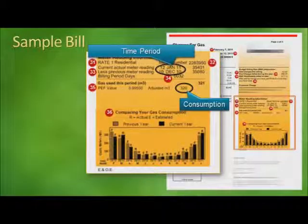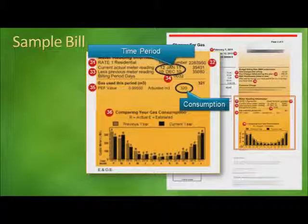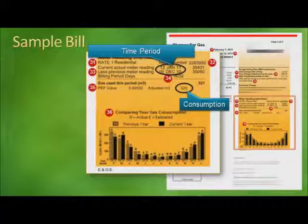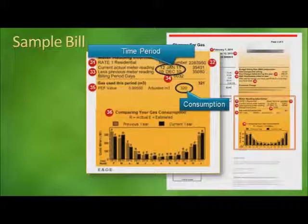Let's look at a sample consumption record — in this case, a natural gas bill. The bill will normally contain a variety of information, including a large amount of numbers. However, for the purposes of determining consumption, the two most important pieces of information are the time period and the amount of consumption. In this case, the time period runs from the 10th of December 2010 to the 12th of January 2011, and the consumption is 320 m³.